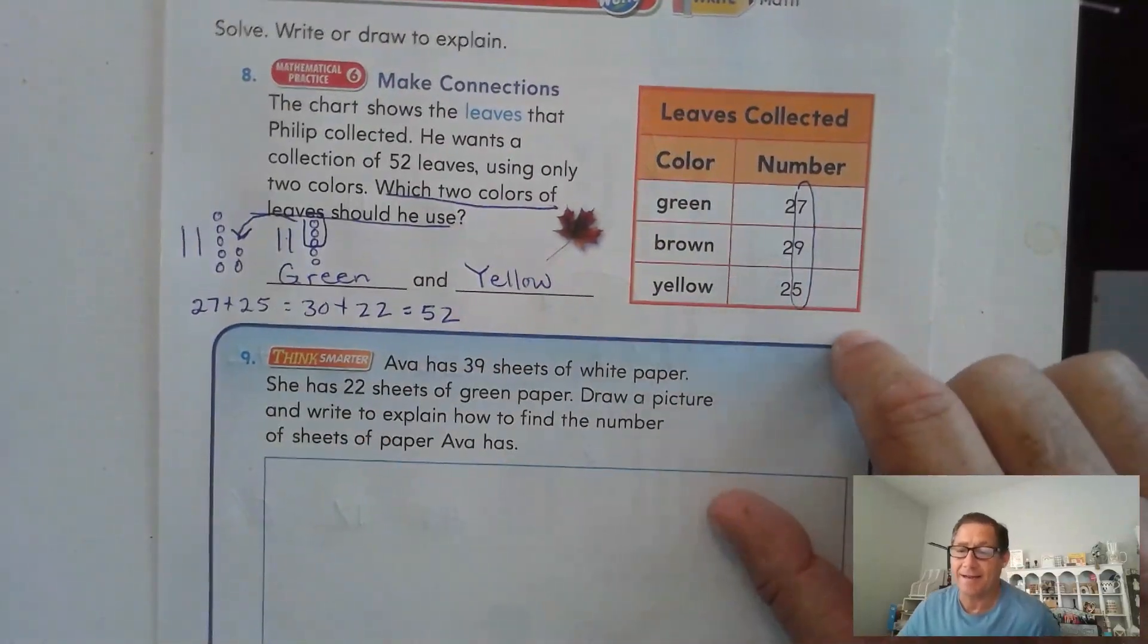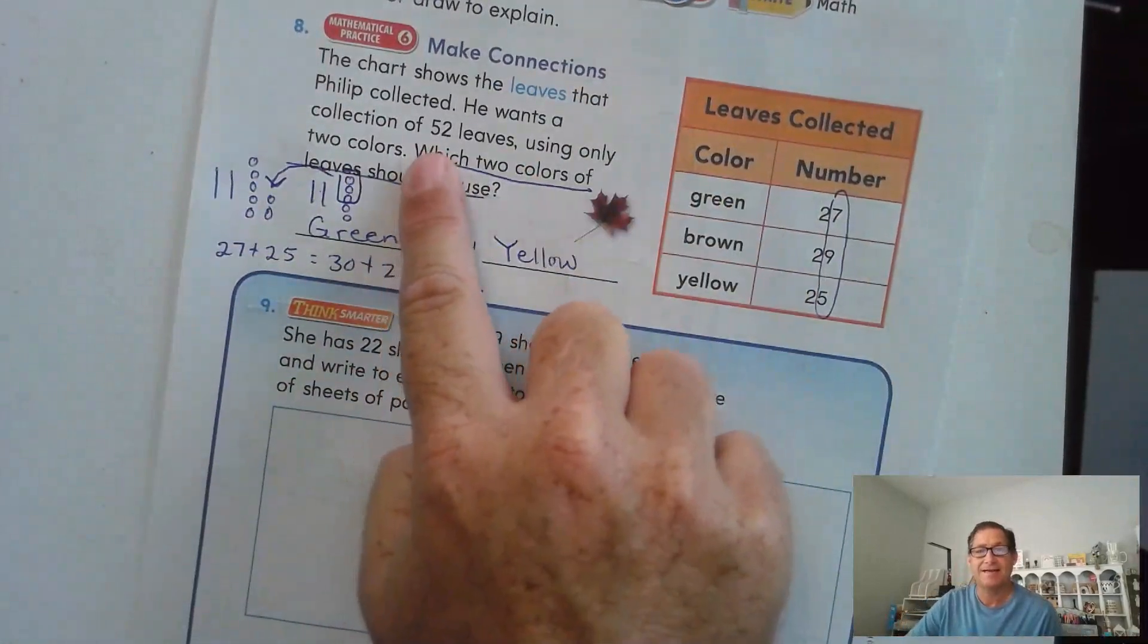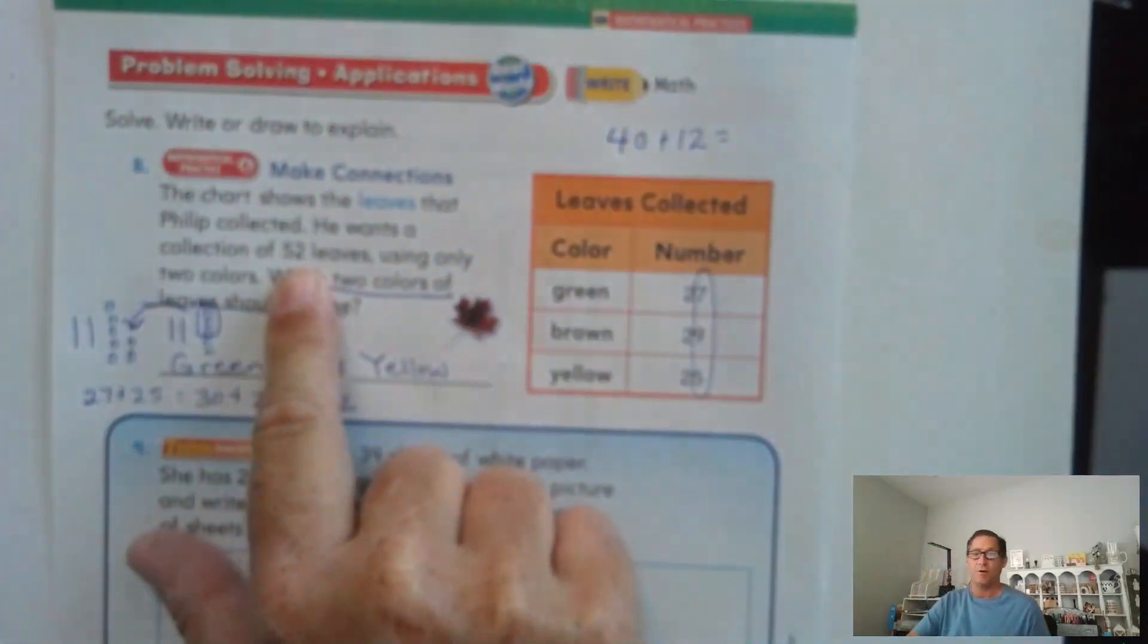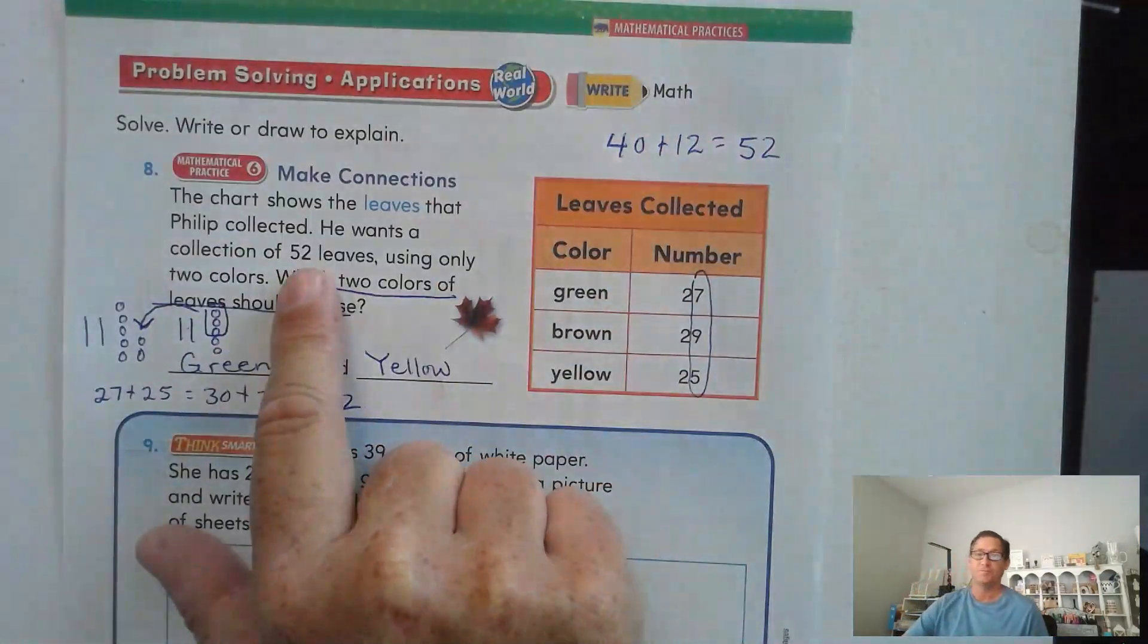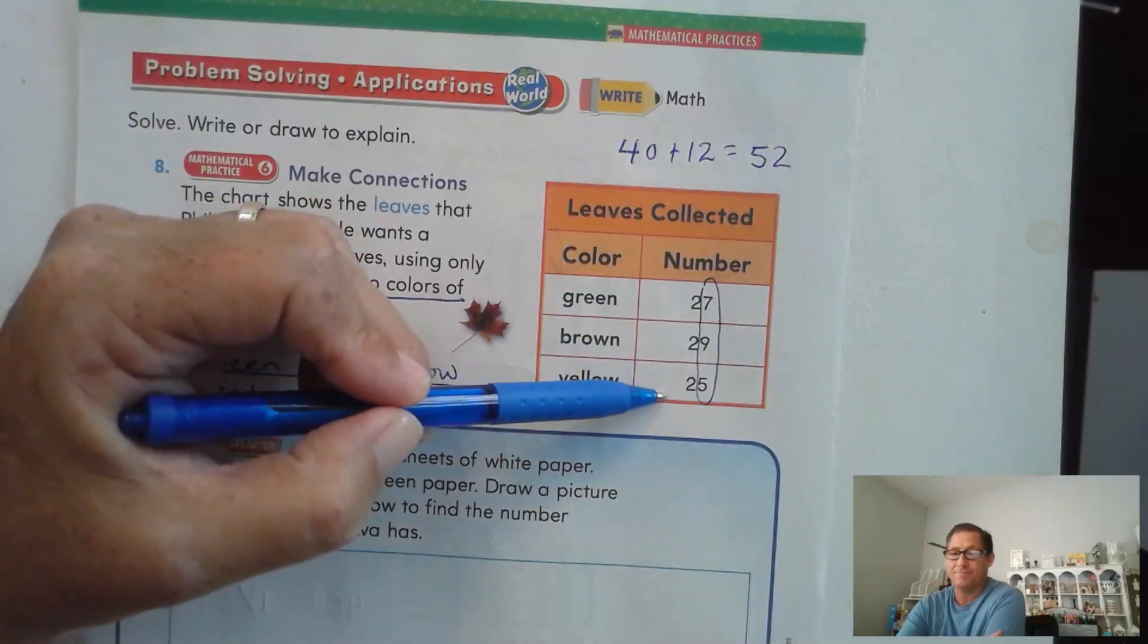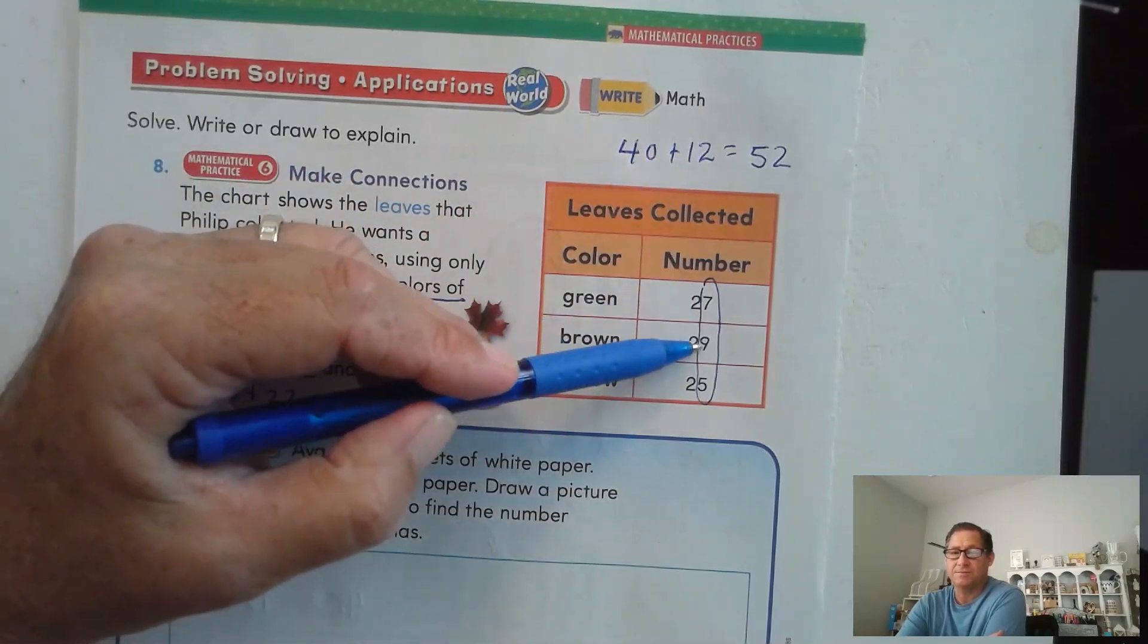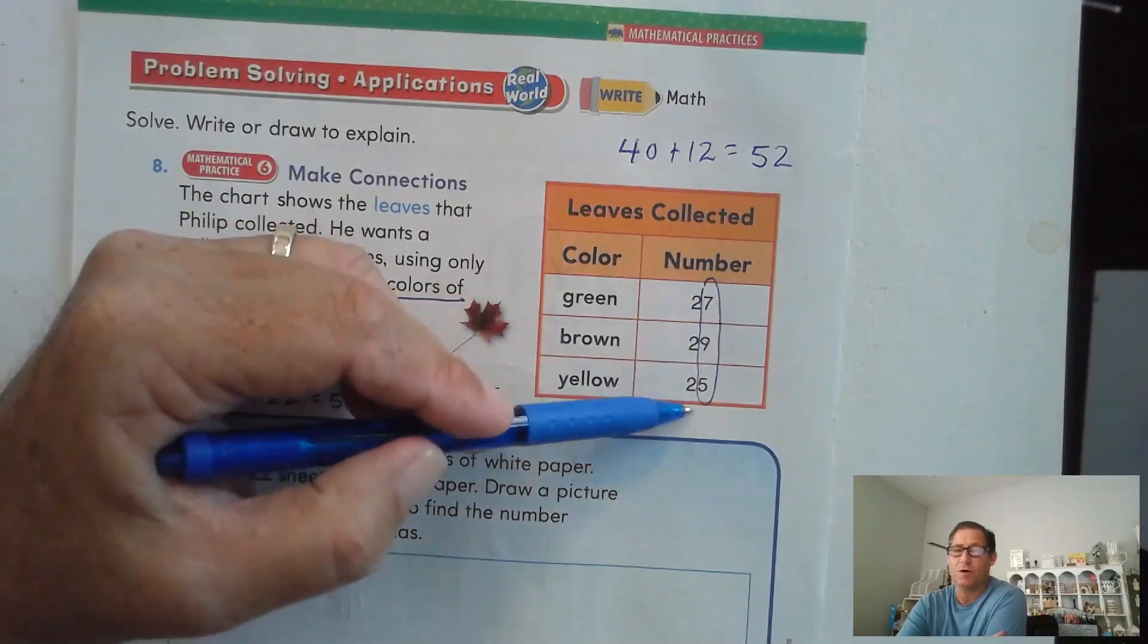So I did some of this in my head. I saw this and knew that I had to have a sum of 12, right? Because I knew that 40 plus 12 is 52. Well, I could add any of these tens to get 40. So that wasn't the problem. It was the sum of 12. And so I looked at the ones and saw which two addends would give me a sum of 12, and it came up with green and yellow.